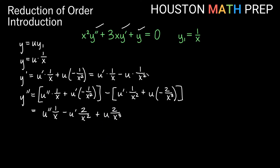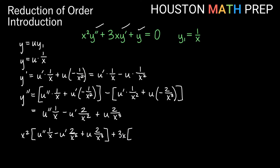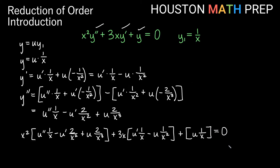Now we plug everything into the original equation. We get x squared times (u double prime times 1 over x minus u prime times 2 over x squared plus u times 2 over x cubed), plus 3x times (u prime times 1 over x minus u times 1 over x squared), plus u times 1 over x, all equal to zero. Since y equals u times y1 is a substitution, this should give us a true statement.